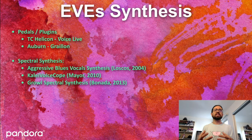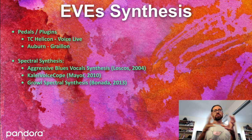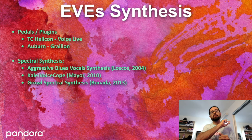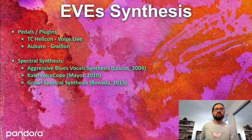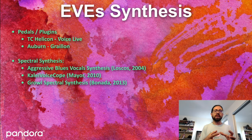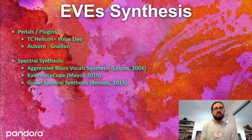Then there are spectral synthesis approaches — more scientific publications. There's a cool paper from 2004 that uses spectral analysis and digital signal processing to transform a blues-type clean vocal into a more Louis Armstrong-style singer. Then there's the Kalei Voice Scope by Oscar Mayer in 2010, where you can convert your voice from male to female, female to male, a child voice, or a monster voice — more like an extreme vocal effect. And then there's a growl spectral synthesis, still more aggressive using slightly more modern techniques and quite convincing.